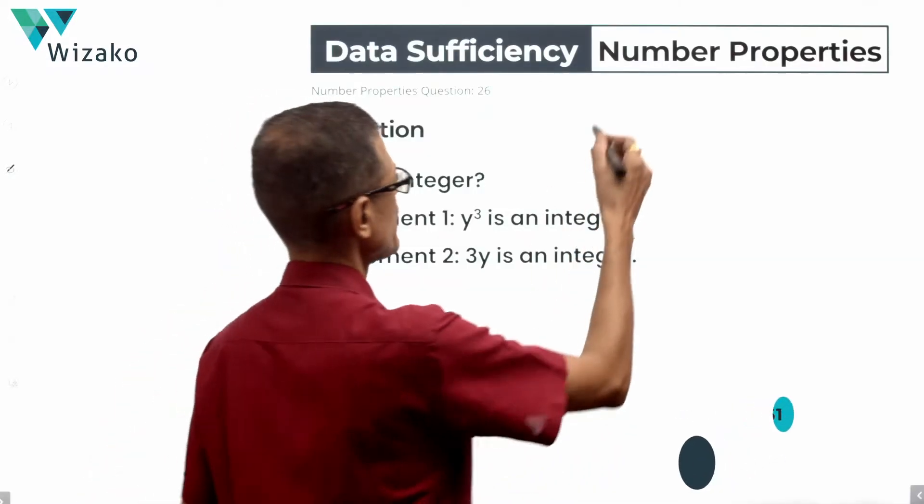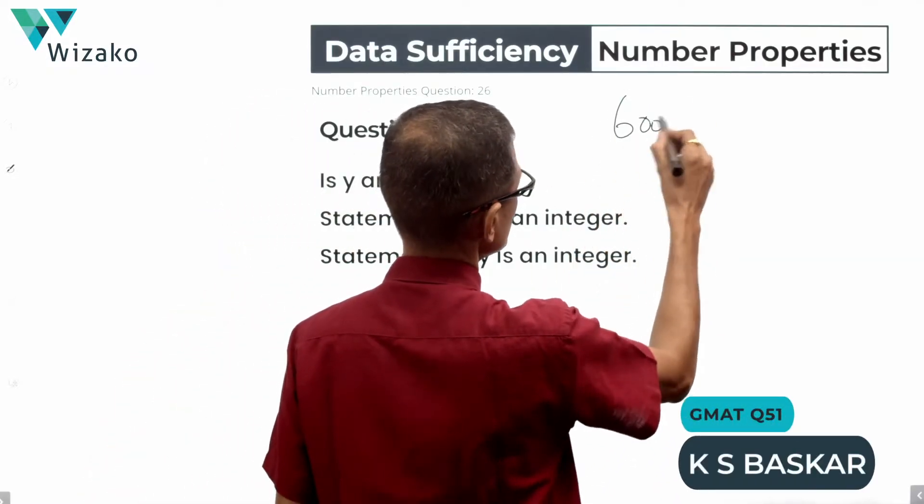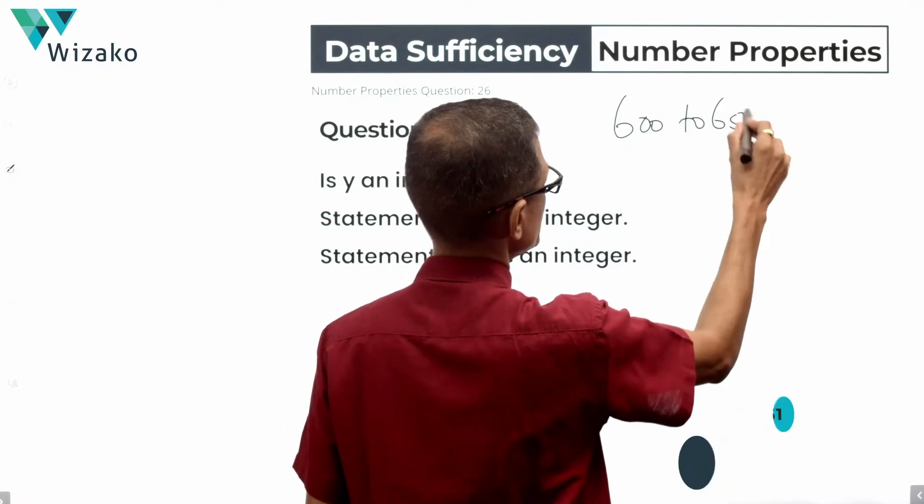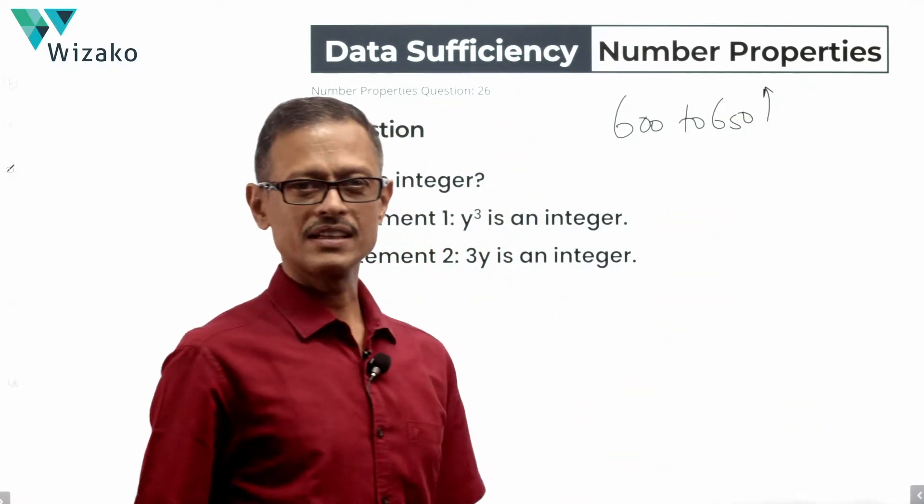Hi everyone, this is a medium difficulty GMAT DS question. I'll classify the question as a 600 to 650 DS question in number properties. Lovely question.